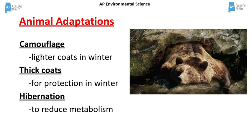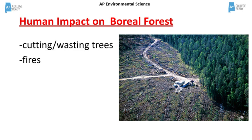The main human impact on the taiga is the cutting of trees and forest fires. This decreases populations of organisms and destroys habitats.